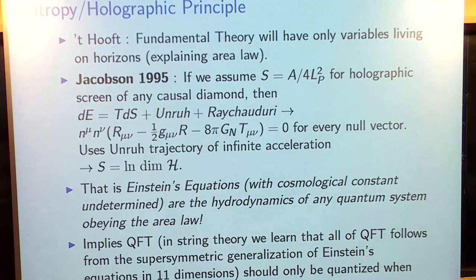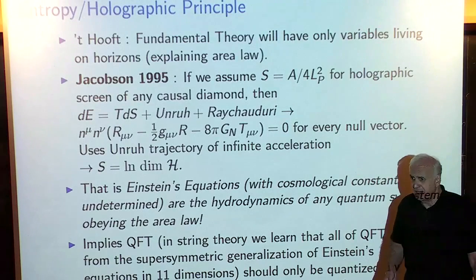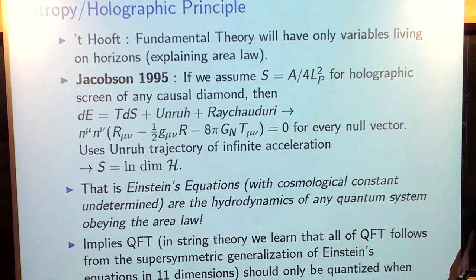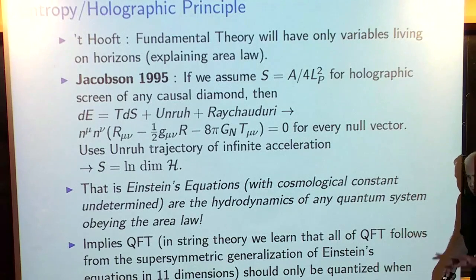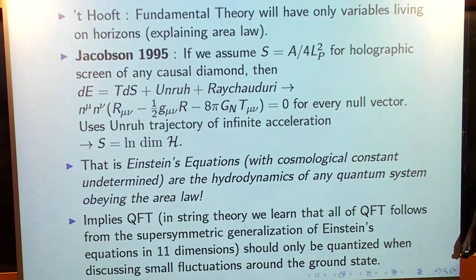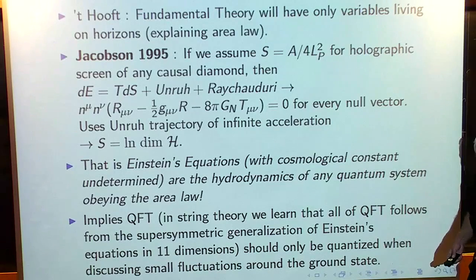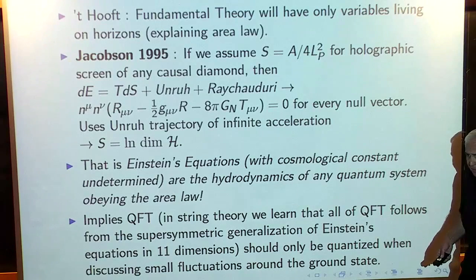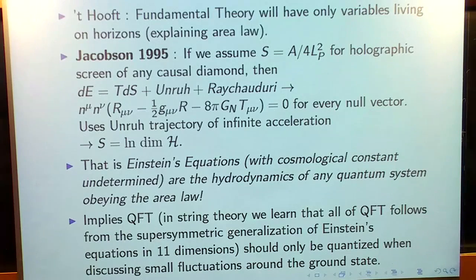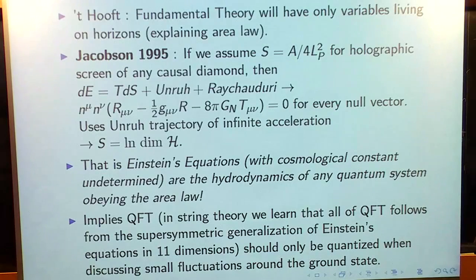String theory has taught us that all of quantum field theory — not just Einstein's equations — should be thought of as descending from gravitational equations in some higher dimension. What this says is that everything we know about quantum field theory, viewed in the context of quantum gravity using Jacobson's paper as a guide, is discussing things applicable to small perturbations around a ground state. In string theory, both in the ADS-CFT correspondence and in traditional perturbative string theory in Minkowski space, we're always studying precisely small perturbations around the ground state of a system that has a ground state.